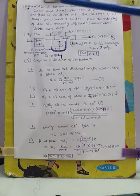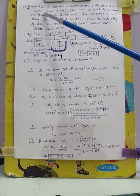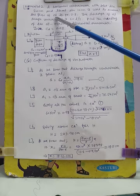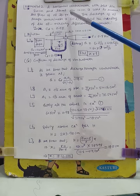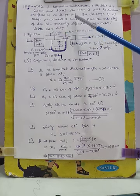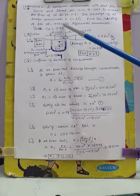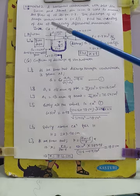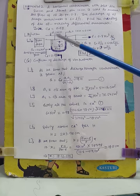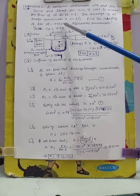Let us see one more problem. A horizontal venturi meter with inlet diameter 20 centimeter and throat diameter 10 centimeter is used to measure the flow of oil of specific gravity 0.8. The discharge of oil through the venturi meter is 60 liters per second. Find the reading of the oil-mercury differential manometer. Take Cd = 0.98. Here discharge is given and we have to find out the manometer reading x.